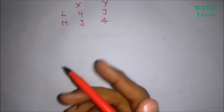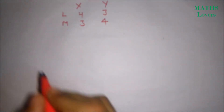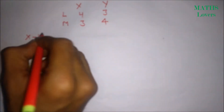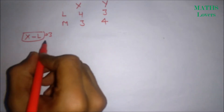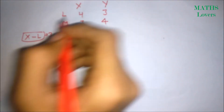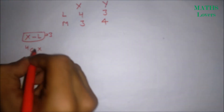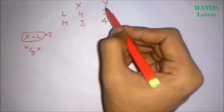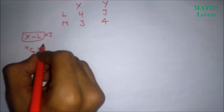Each group must have exactly three ladies and three men. Let's assume Case 1: X is inviting three ladies. The number of ways to select three ladies from X's four lady friends is 4C3. If X is calling three ladies, then Y has to call three men, which gives 4C3 ways.